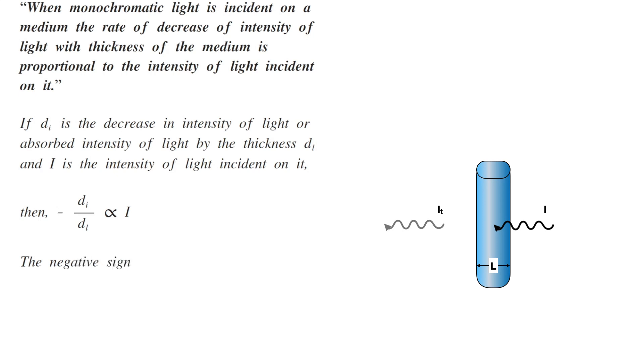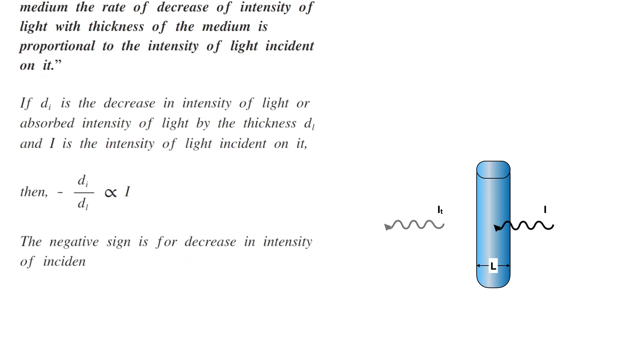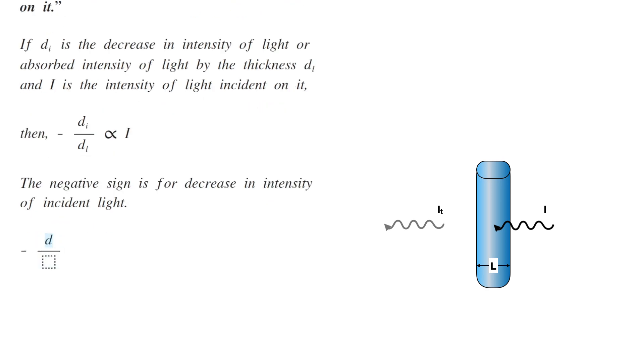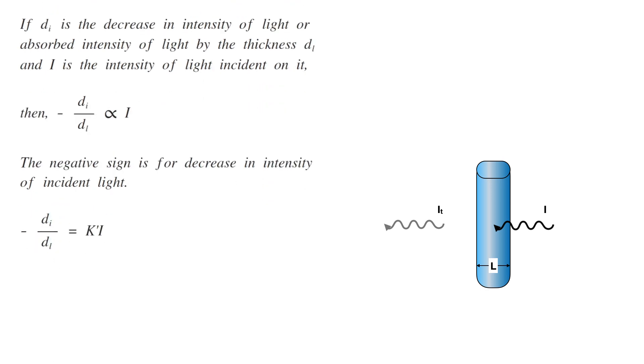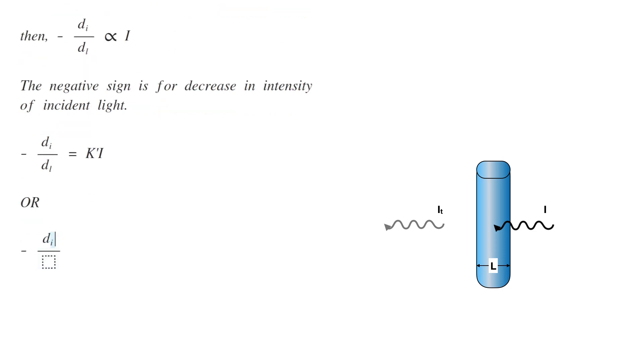The negative sign is for decrease in intensity of incident light. Therefore, minus dI by dL equals K' I, or minus dI by I equals K' dL.